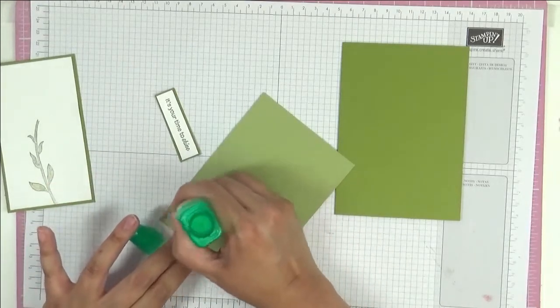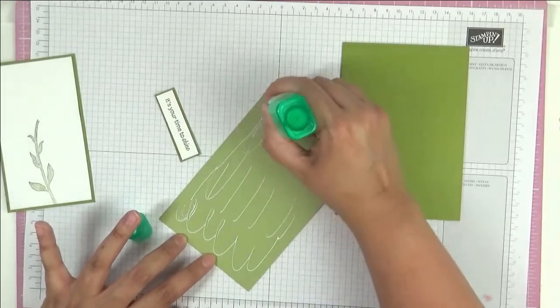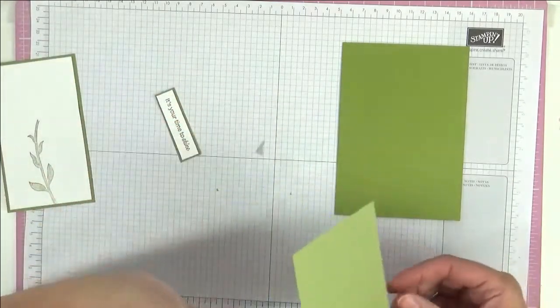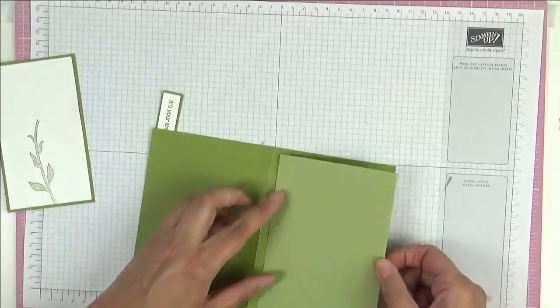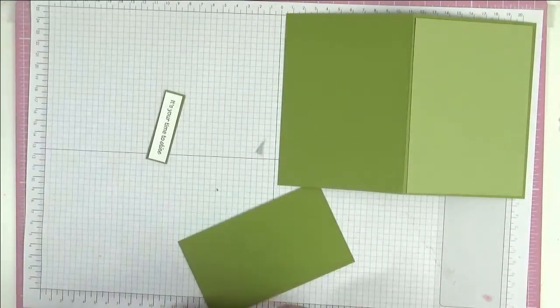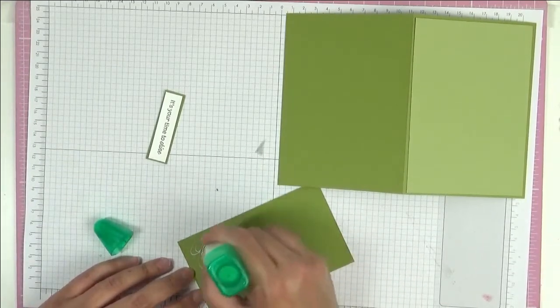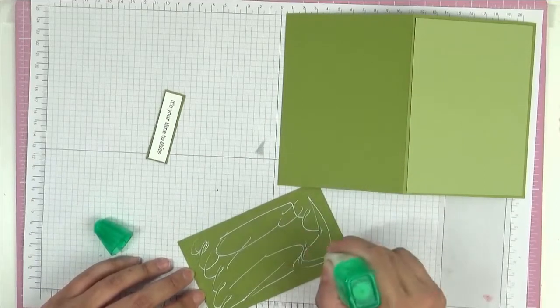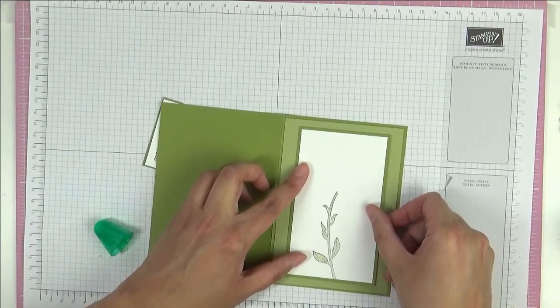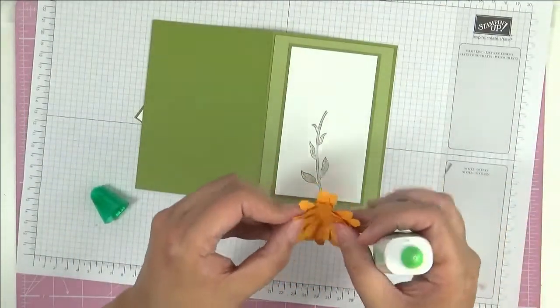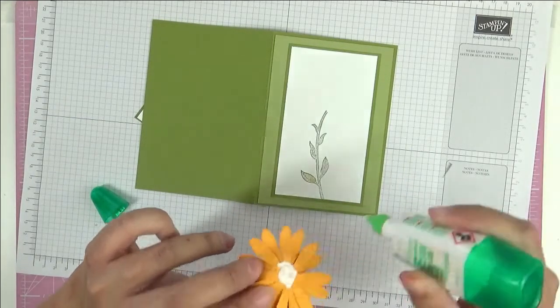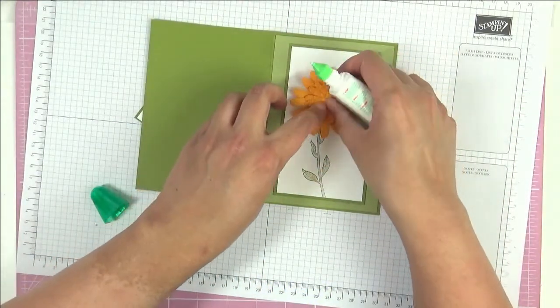So let's bring back our card base. This is going to be Old Olive as well and it's a standard A6 card base - that's an A4 sheet cut in half and then folded in half. And then we're going to put on some of this Pear Pizzazz - those really tonal colors so that the flower really pops. Just like that. And then some more on the back of here. I'm just going to center this roughly, something like that. And then a flower - I'm just going to fluff it up a little bit before I put it down.